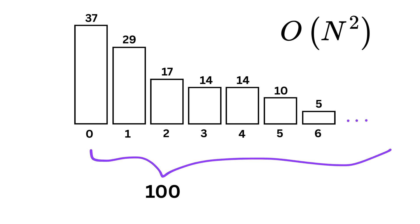This means if there are 100 numbers in the list, in the worst case, it may take 100 times 100, that is 10,000 steps.